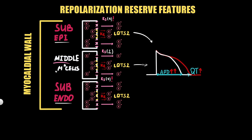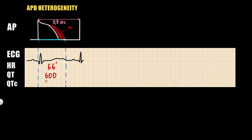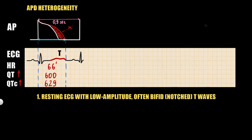Different action potential durations in different myocardial regions is called heterogeneity of action potential duration. This heterogeneity leads to prolongation of QT and corrected QT interval on resting ECG. Heterogeneity is also one theoretical model explaining the low-amplitude, bifid, or notched T-wave on resting ECG classically observed in LQT syndrome type 2. Another possibility is that the second component of the T-wave is actually a U-wave.